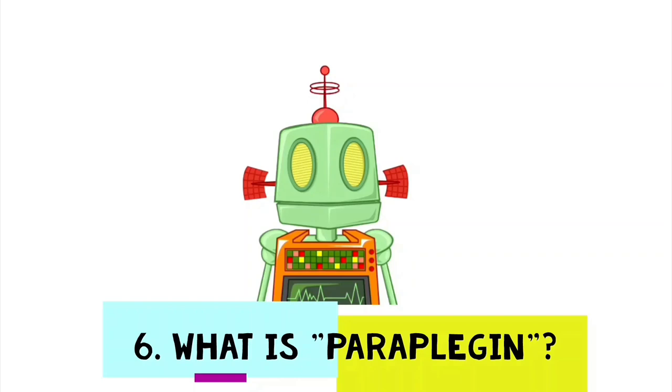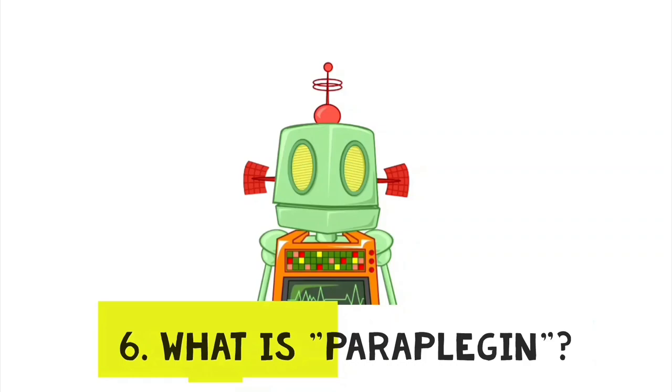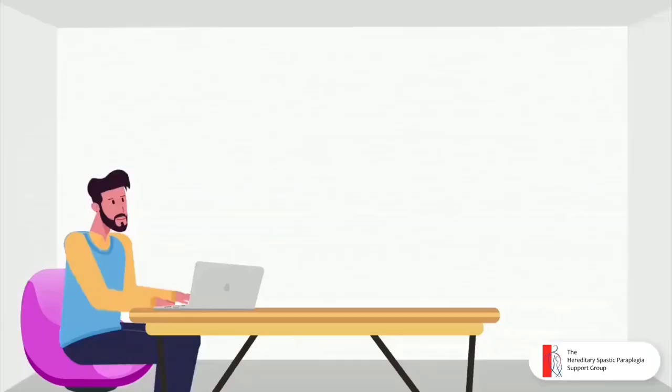I just want to ask, I mean, I've been diagnosed with SPG7. I've noticed under one of his charts, mitochondrial functions, it was mentioned there as paraplegine. And what does that actually mean?